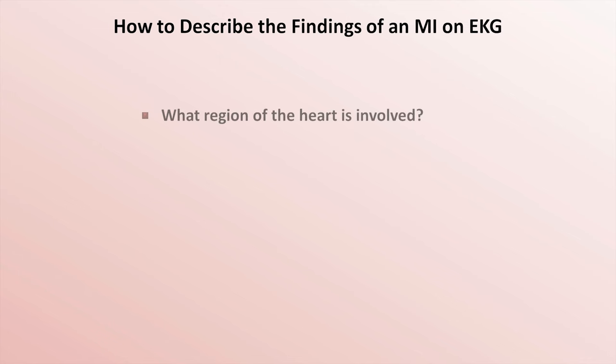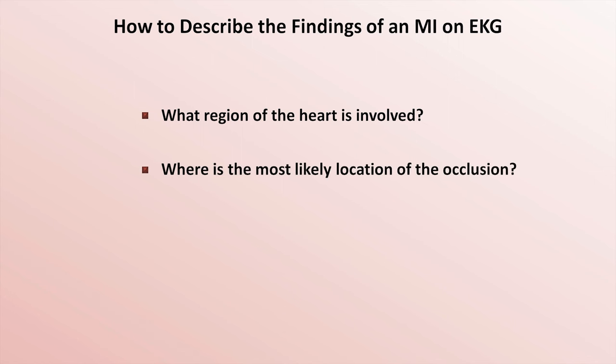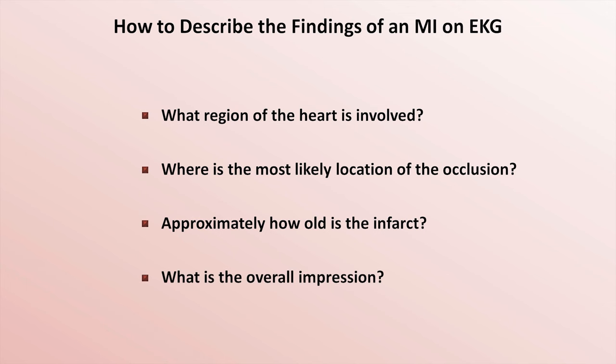Let's put all of this together into a four-step process for describing an MI based on a patient's EKG. Step 1: identify the region of the heart that is most likely infarcting or has infarcted. Step 2: identify the most likely location of the occlusion. Step 3: identify how old the infarct is. And last: summarize the overall impression.